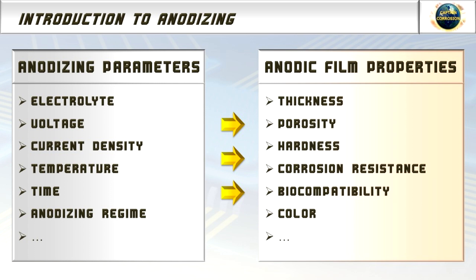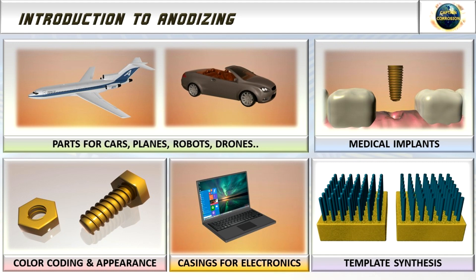The thickness, porosity, hardness, corrosion resistance, and other properties of the created oxide layer can be tuned by utilizing correct anodizing parameters. Such control over the properties of the anodic oxide layer and many post-treatment possibilities make anodizing an extremely useful technique for a variety of applications.